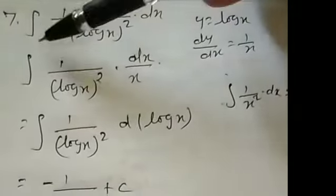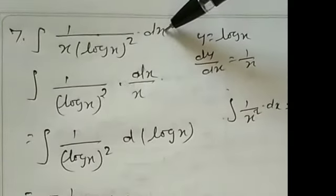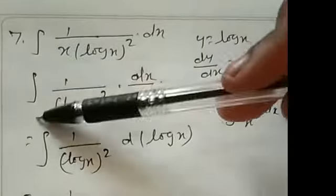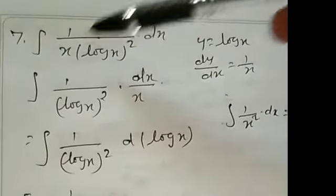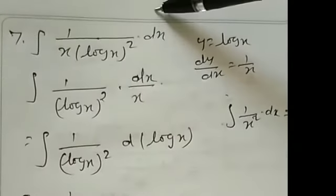Okay, now we will see the 7th sum. Integration of 1 by x into log x the whole square into dx. Listen here. Integration of, first hand up here, x into log x whole square. So, denominator two terms are there, you know. Just write it separately.